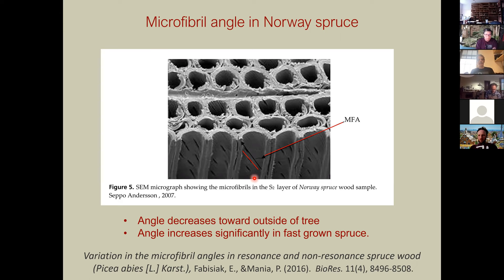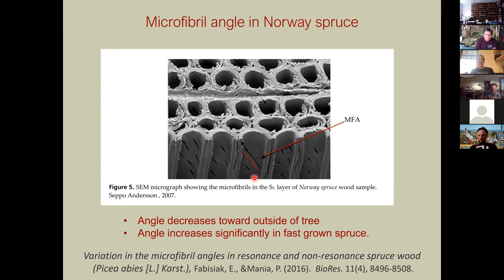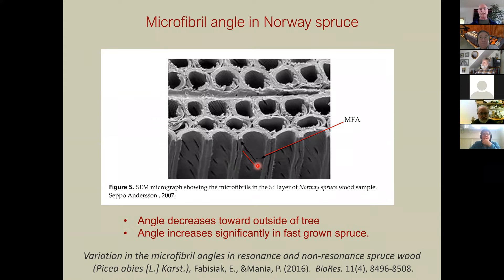The microfibril angle increases significantly in fast-grown spruce, which I think explains why makers tend to prefer slow-grown spruce and wood from the outer part of the tree — where the fibers are more aligned with the grain, giving greater stiffness. This also explains why we pick wood from the outside of the tree: the fibers are more in line with the grain.